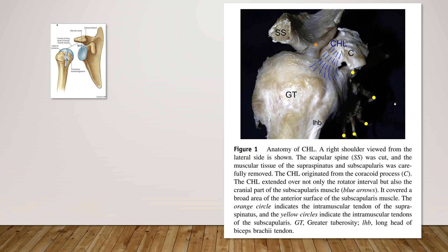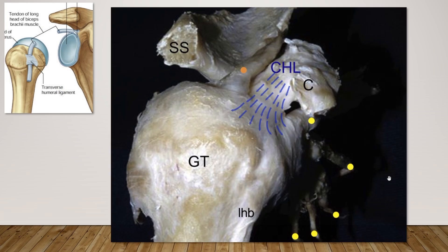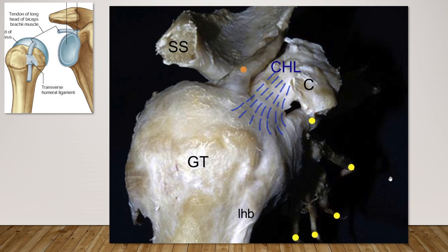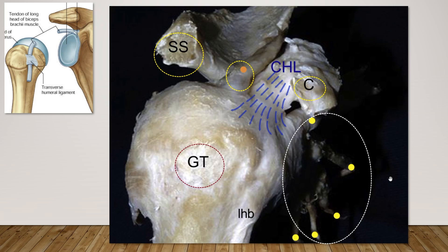In this image, the right scapula spine was cut and muscular tissue — infraspinatus and subscapularis — was carefully removed. Here is the greater tubercle, coracoid process, and cut section of the scapula spine. The orange circle indicates the intramuscular tendon of the supraspinatus, and the yellow circle indicates the intramuscular tendon of the subscapularis. This structure is the long head of the bicep tendon.